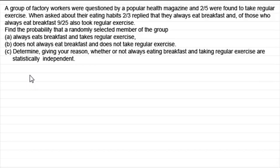In this video I want to show you first of all how we can do this by way of a Venn diagram, and then in another video I'll do it by a tree diagram. So if we're doing a Venn diagram, what we need to do is draw a box that represents all the factory workers, and then we've got two groups: those that eat breakfast and those that have regular exercise.